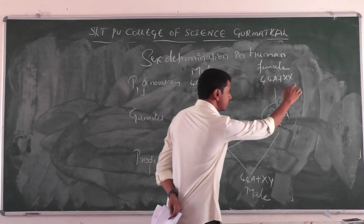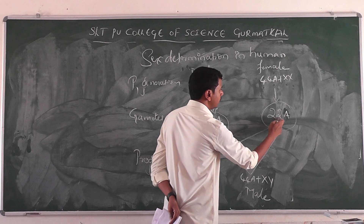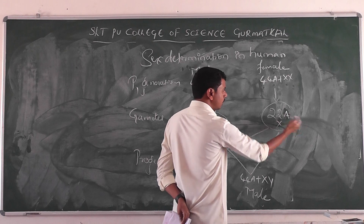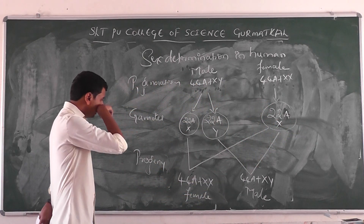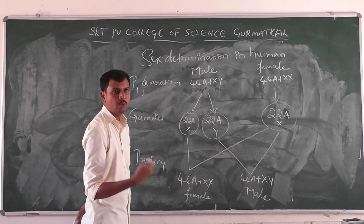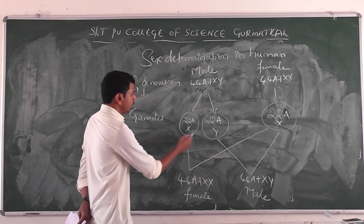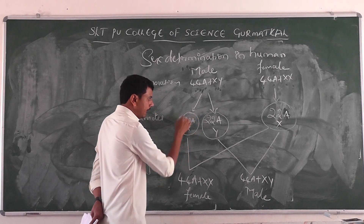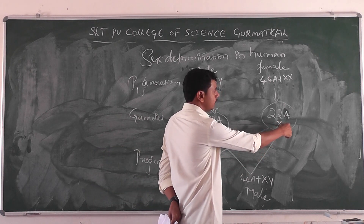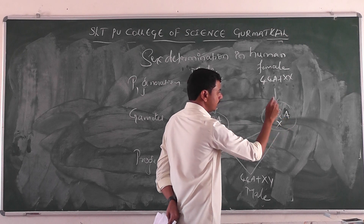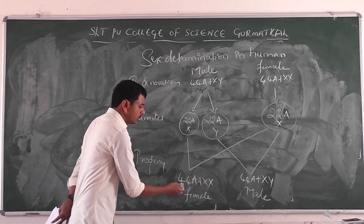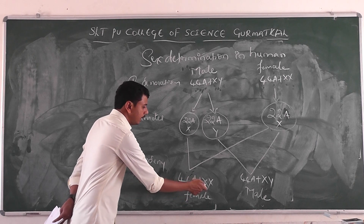In the case of the female, all gametes will contain 22 autosomes and the X chromosome — the remaining half of the gametes will also contain 22 autosomes and X chromosome. In the case of the progeny, if the gametes with 22 autosomes and X chromosome is fused with the female gamete of 22 autosomes with X chromosome, the coming progeny will be female because you get 44 autosomes and XX chromosome.